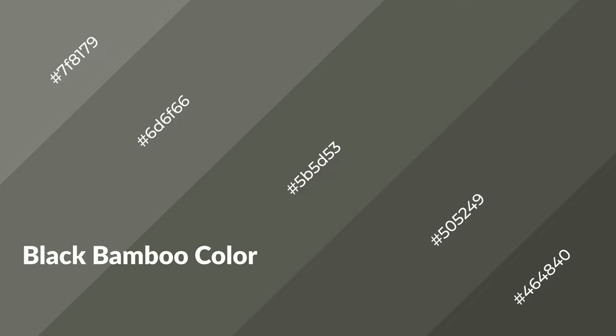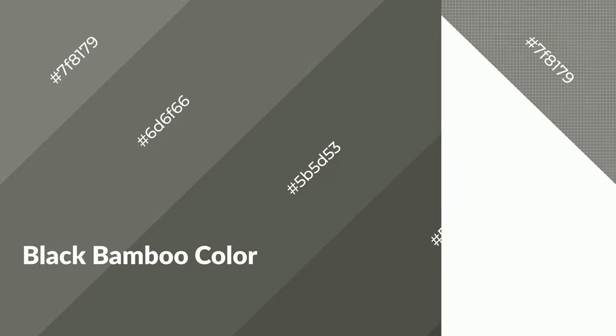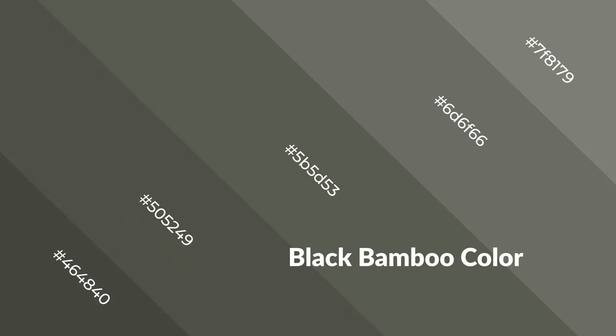Black bamboo is a warm color and it emits cozier and active emotions. Warm colors are symbols of warmth, fire, heat, and sunshine. It also evokes joy, passion, love, and even anger emotions. You can see them used in restaurants and gyms.